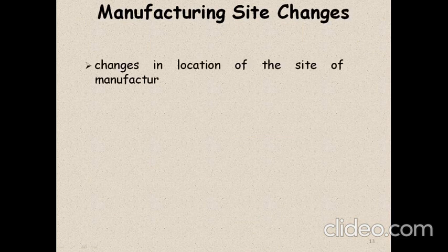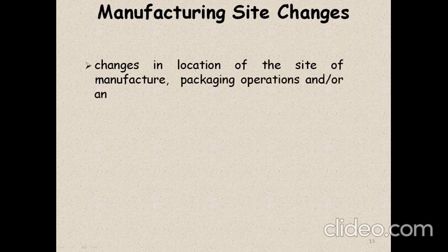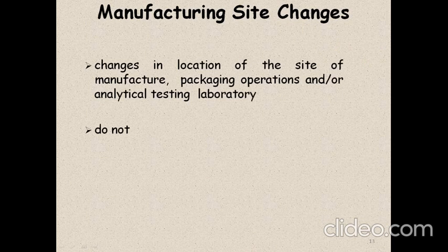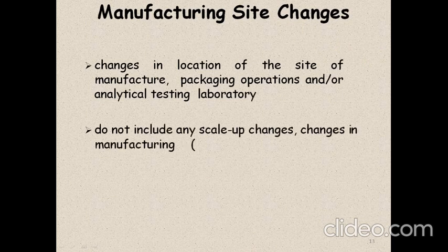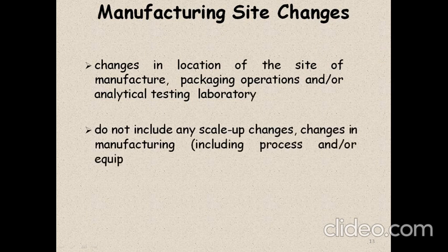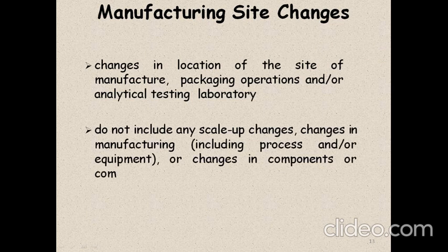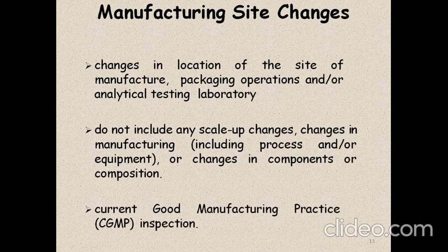Manufacturing site changes include changes to the location of the actual manufacturing plant, packing operation, and analytical test laboratory. If you want to change the site of any of these, you must follow these guidelines. Site changes do not include changes in process, equipment, or composition, since separate guidelines are given for those. The new manufacturing site must be in line with CGMP guidelines.